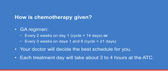The GA regimen can be given every two weeks on day one, or every three weeks on days one and eight. This two or three week time period is called a cycle. Your doctor will decide the best schedule for you. For each treatment day, you will be at the ATC for about three to four hours.